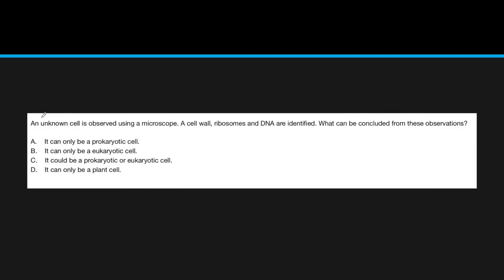So, here is a sample question. An unknown cell is observed under a microscope. A cell wall, ribosomes, and DNA are identified. What can be concluded from these observations? Well, if we know that there's a cell wall, ribosomes, and DNA, we'll look at the first thing. It can only be a prokaryotic cell. Well, it can be a prokaryotic cell, so maybe. It can only be a eukaryotic cell. Well, it can be a plant, so also maybe. It can be both, and it can only be a plant. Well, bacteria have DNA. Bacteria will have a cell wall, so that's not necessarily true. And since these both kind of can occur, these are not the answers, and that leaves you with C.